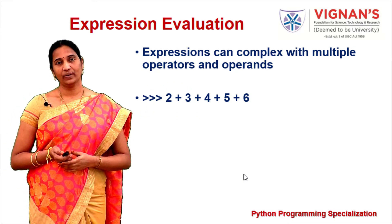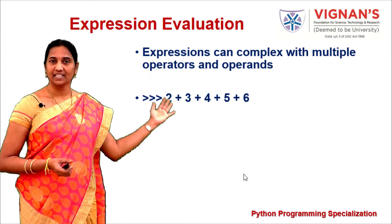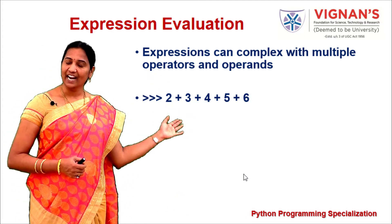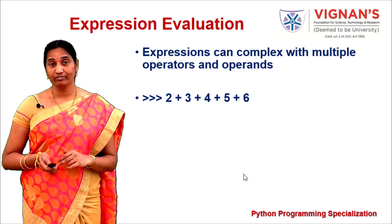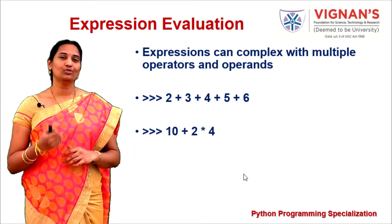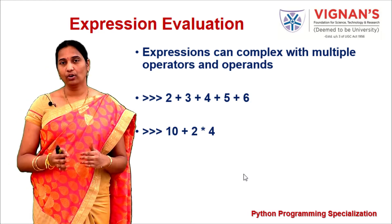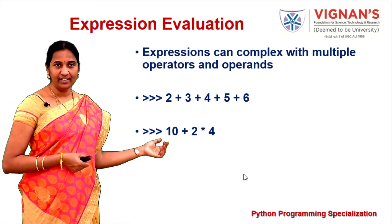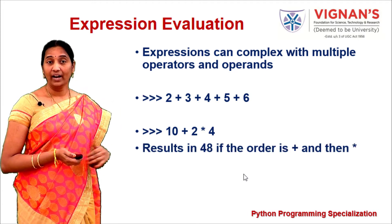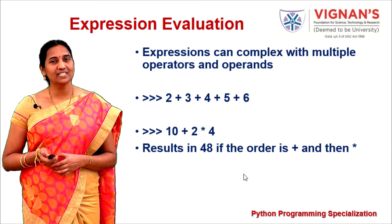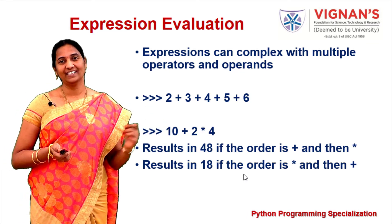Starting from the end: 5+6=11, +4=15, +3=18, +2=20. In whichever order you perform the operation, the result is the same because all operators are of the same nature. But consider 10 + 2 * 4 — the result depends on the order. If you do addition first: 10+2=12, then 12*4=48. If you do multiplication first: 2*4=8, then 10+8=18.